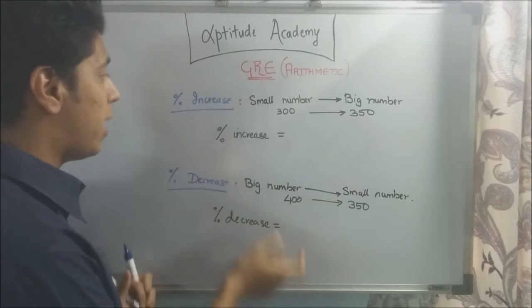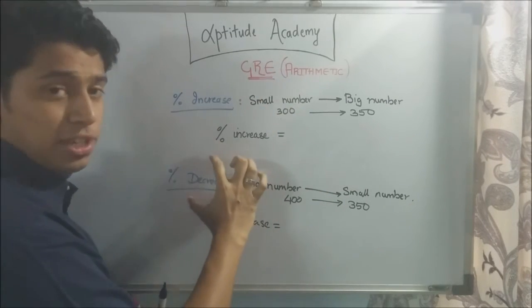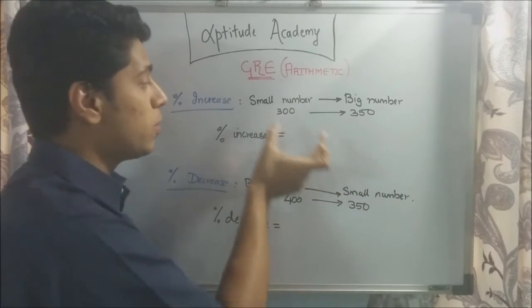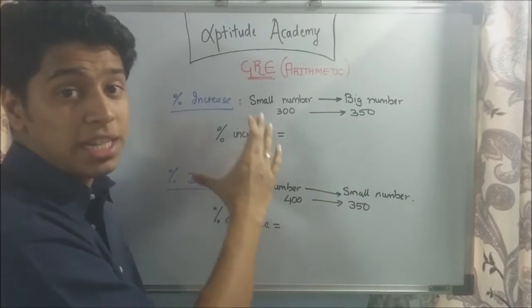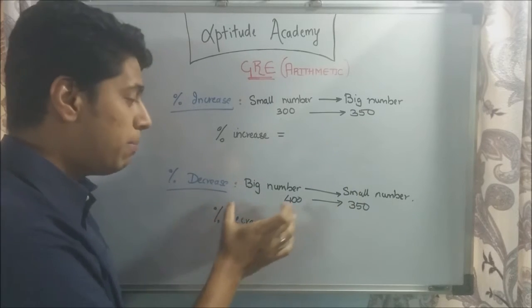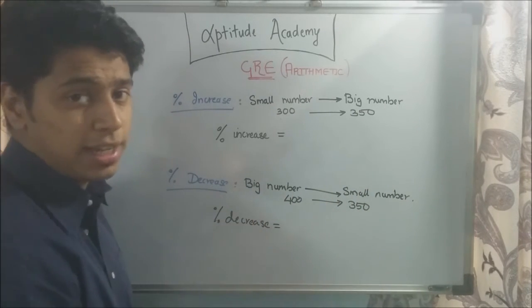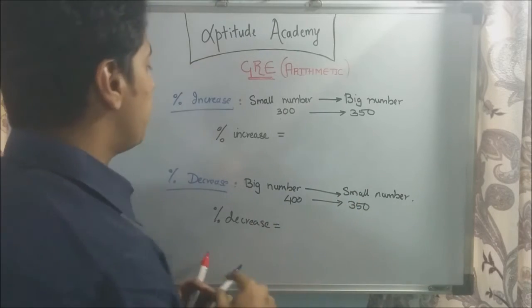Sometimes on the GRE, a small part of the sum is going to be to calculate the percentage change, the percentage increase or the percentage decrease. Let's see how to do that. You're going to have two scenarios. When a number changes, you're either going to have a percentage increase or a percentage decrease. Now, you'll have a percentage increase when a small number becomes a big number. So when 300 is increased to 350, you're going to have a percentage increase because the number is increased. Similarly, when a big number goes on to a small number, like 400 becomes 350, you'll have a percentage decrease because the number has decreased.